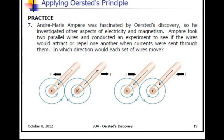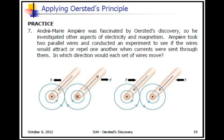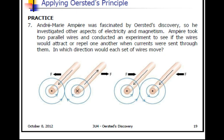Andre Marie Ampere was fascinated by Orsted's discovery, so he investigated other aspects of electricity and magnetism. Ampere took two parallel wires and conducted an experiment to see if wires would attract or repel one another when currents were sent through them. In which direction would these wires move? In the case on the left where we have our magnetic field getting stronger between, they would move closer together. In the case on the right where they're opposing, they would move farther away from each other.